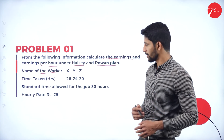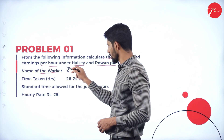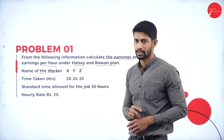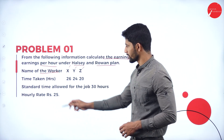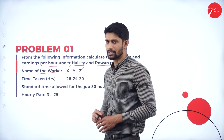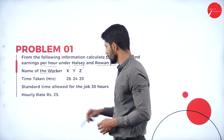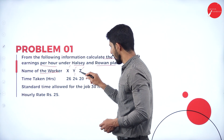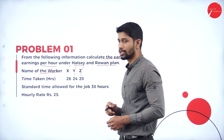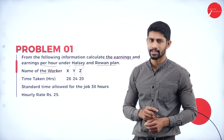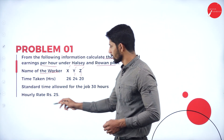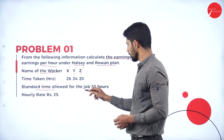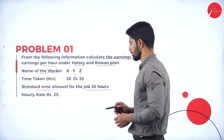We have three workers: Mr. X, Mr. Y, and Mr. Z. The time taken by Mr. X is 26 hours, by Mr. Y is 24 hours, and by Mr. Z is 20 hours. The standard time allowed for the job is 30 hours.